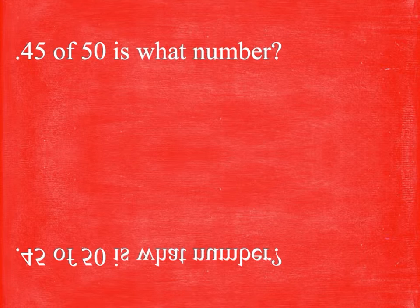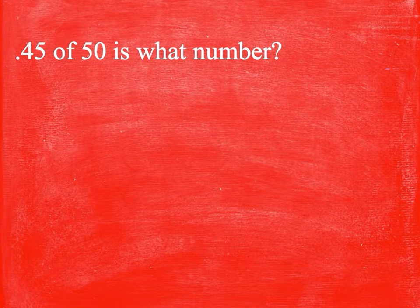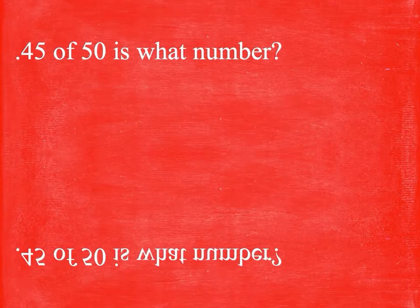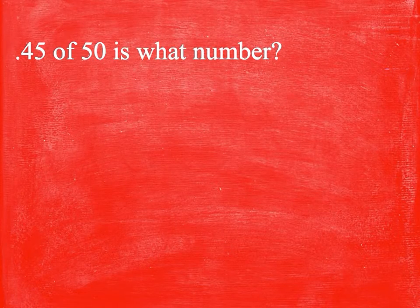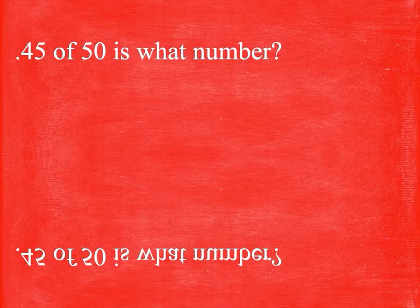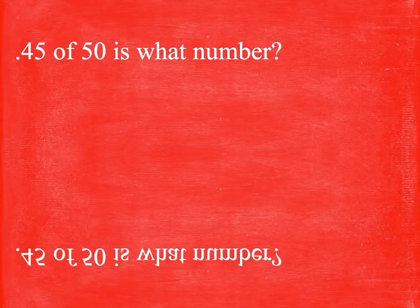So I'm going to go 0.45 times 50. 0.45 times 50, I have to add my zeros on the end there. If you're not sure what to do, feel free to ask me that question. That's 25, that is 22, move that decimal over twice. x is equal to 22.5.